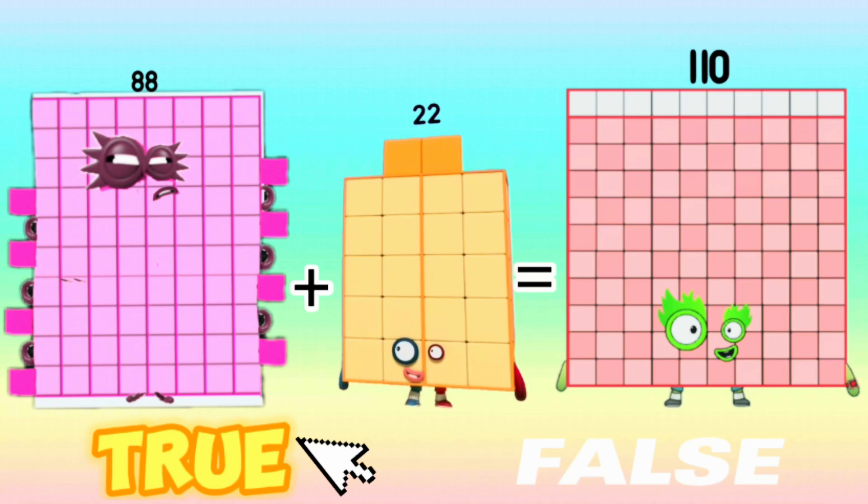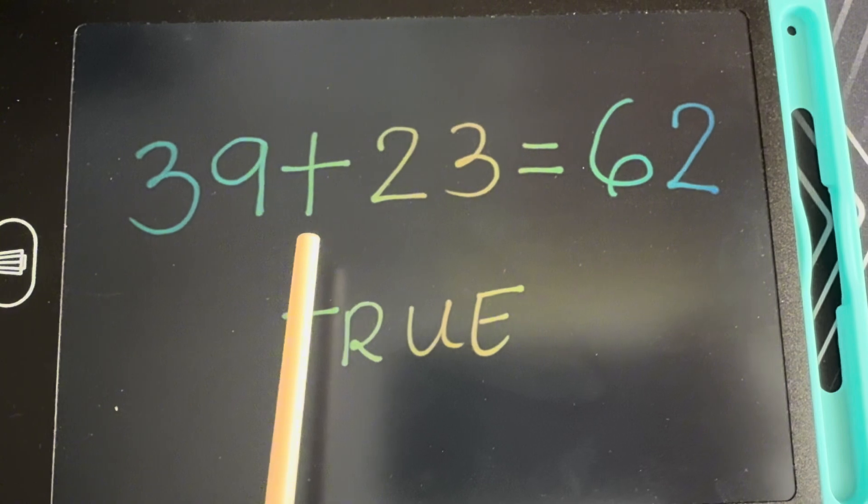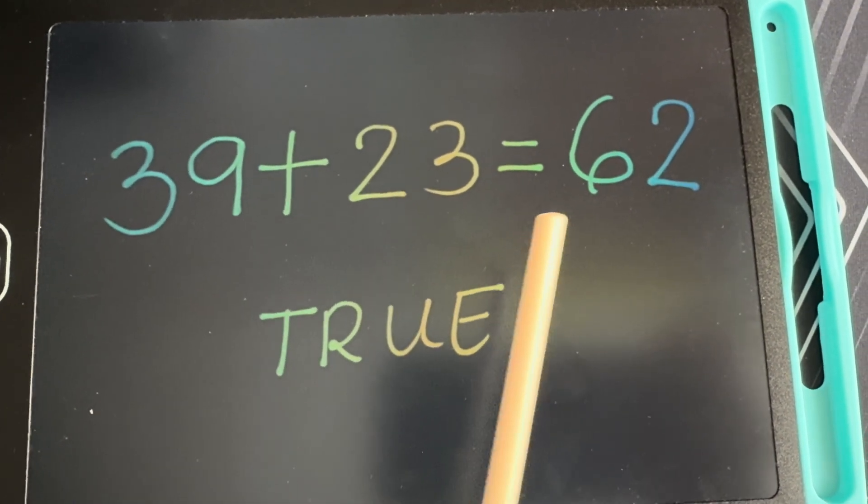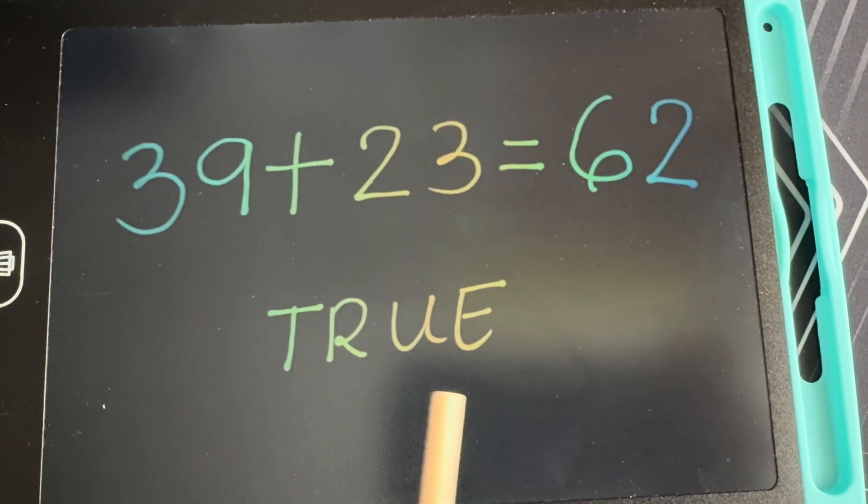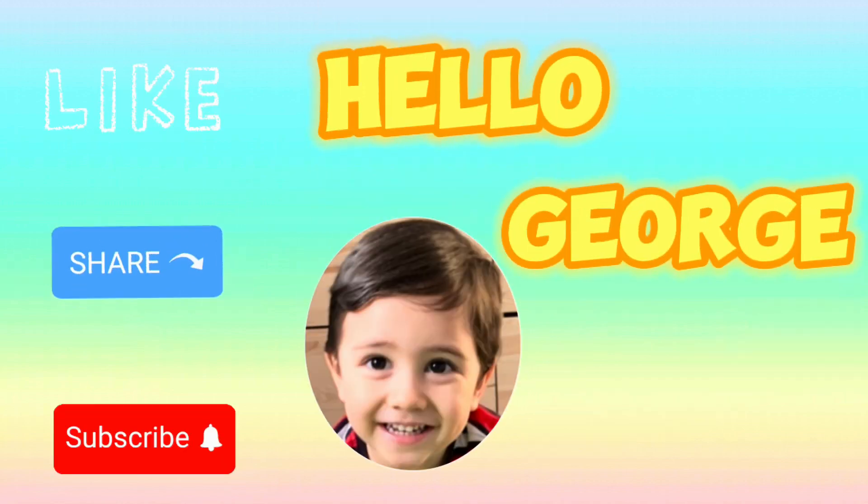And last but not the least, 88 plus 22 is equal to 110. The answer is true.